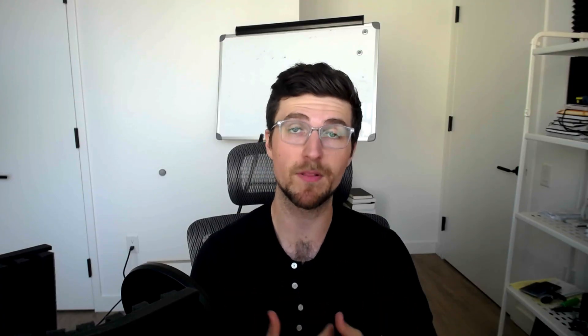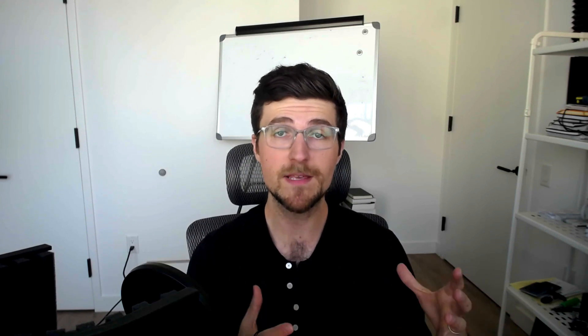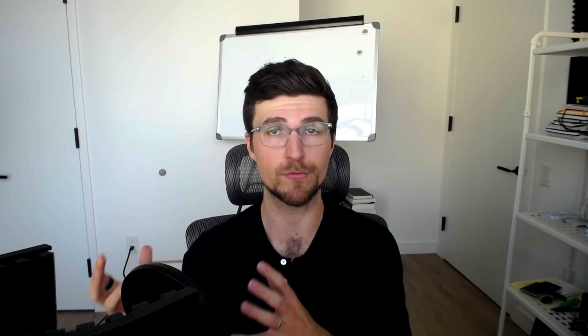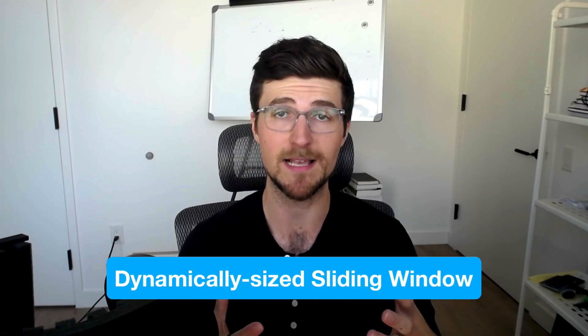Now what we just covered is the simplest form of a sliding window: a fixed size sliding window. In this case our window is staying the same size throughout. Our window is always size k. But there's also another type of sliding window and that is a dynamically sized sliding window.